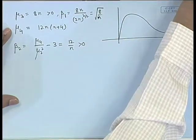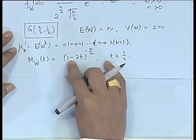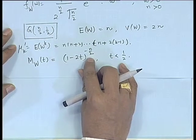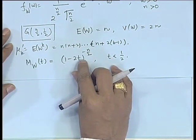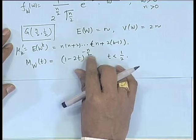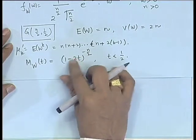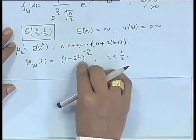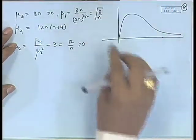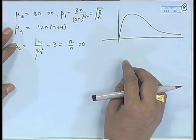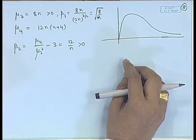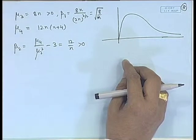In fact, as n becomes large this is tending towards normality. We can see this from the MGF as well, because it is (1 − 2t)^(−n/2). If we take the limit as n tends to infinity, after certain adjustments we can show that this will tend to the moment generating function of a normal variable.